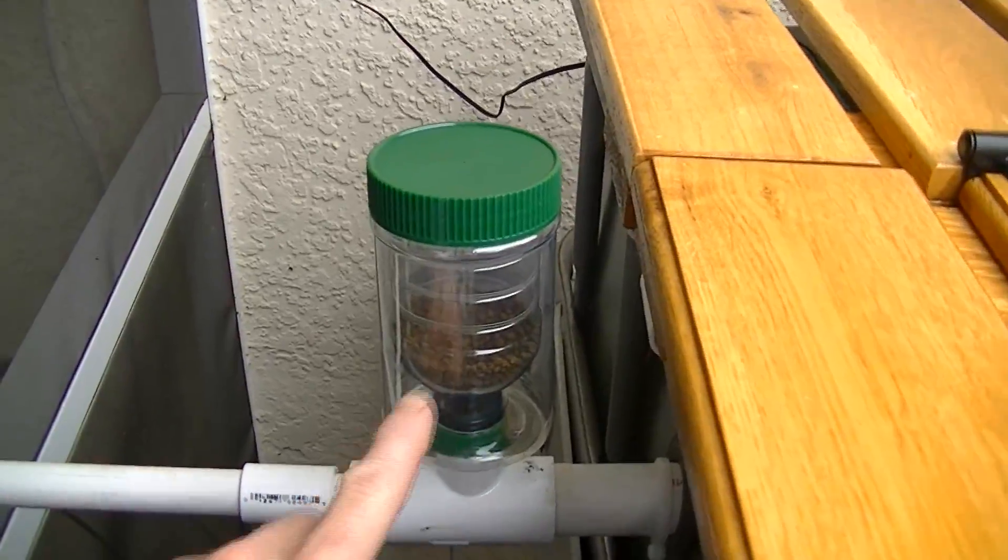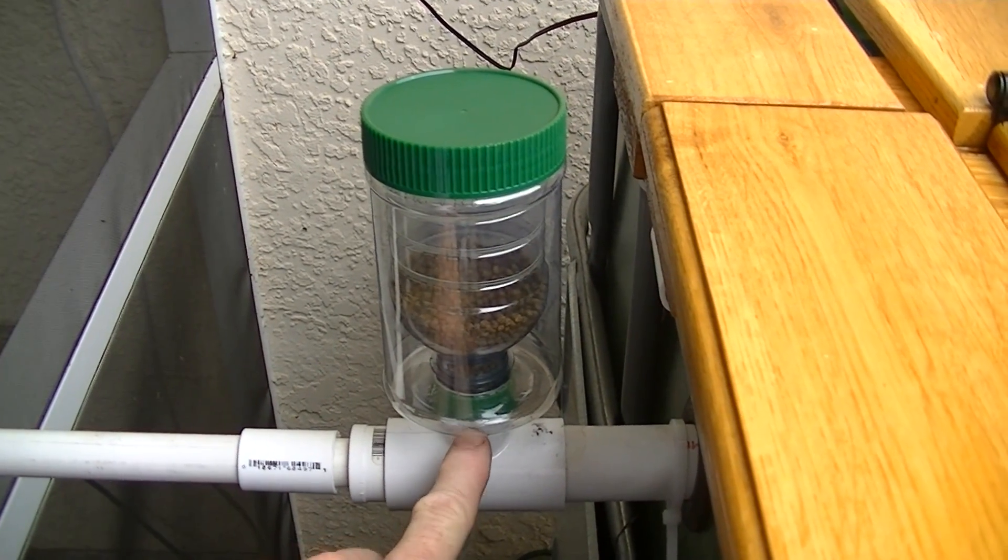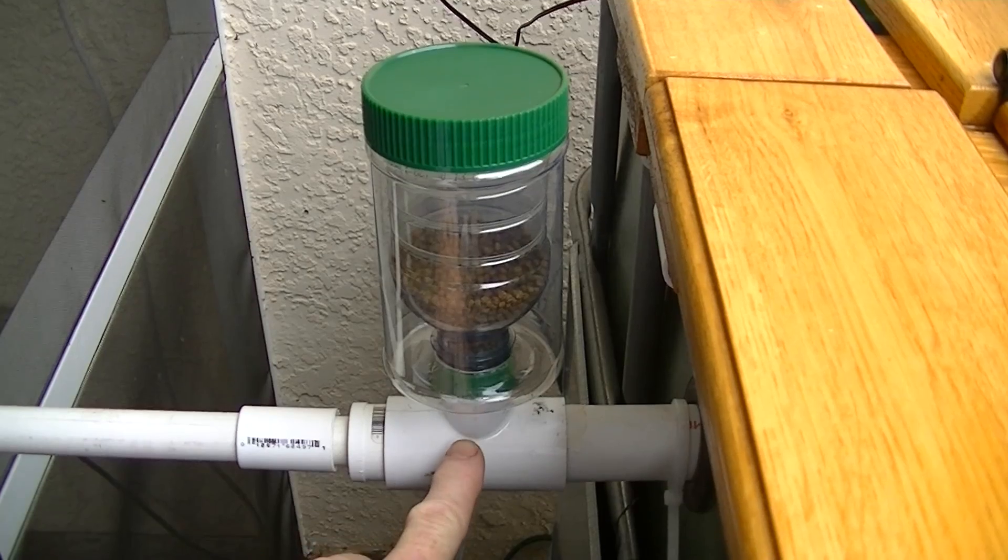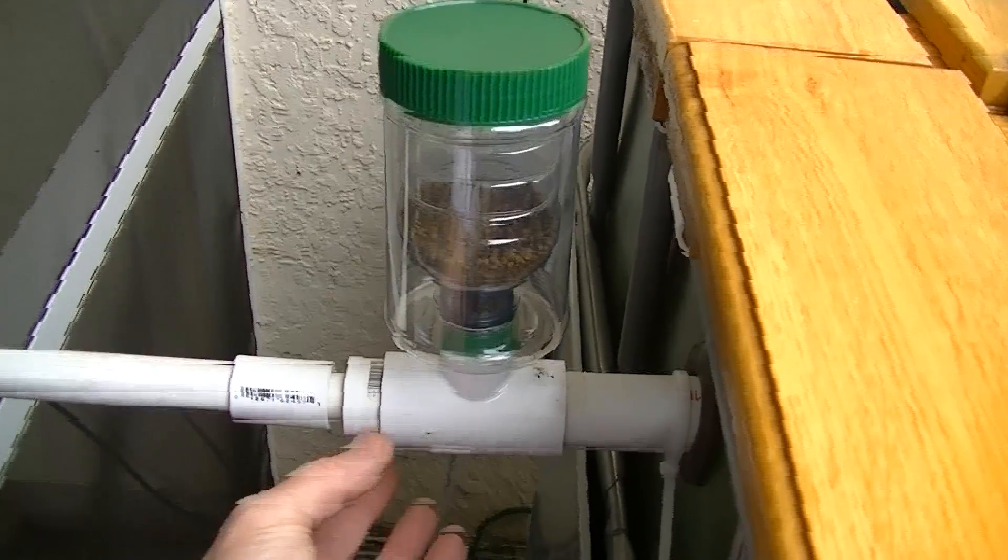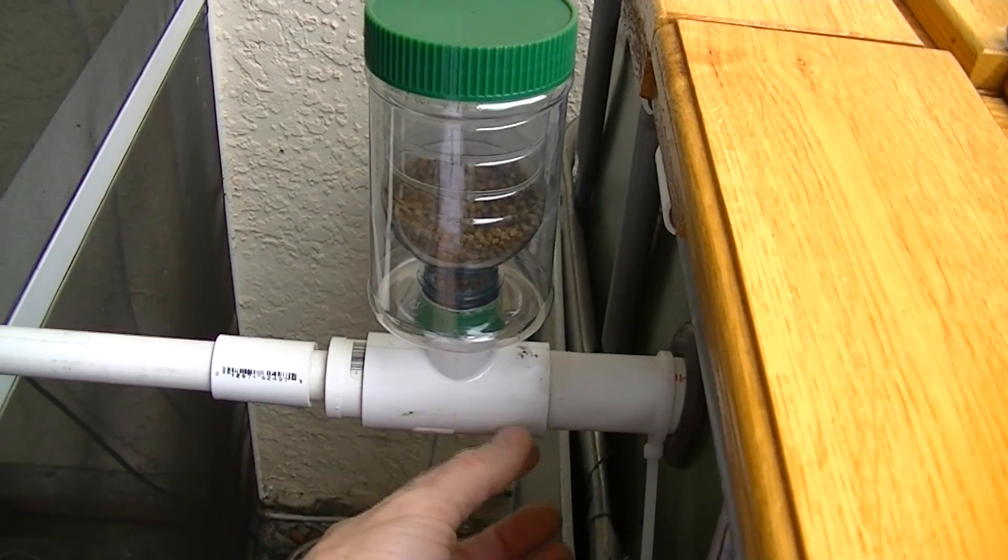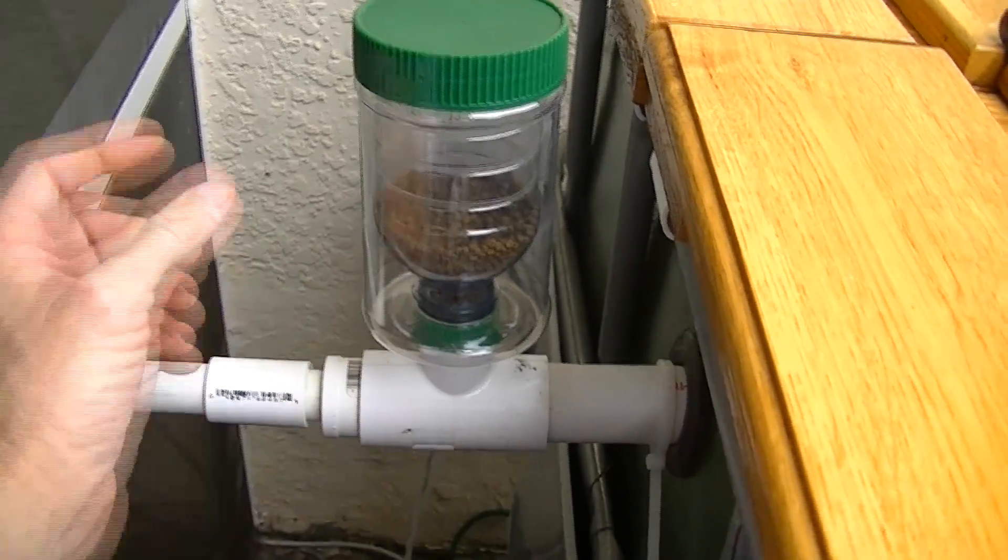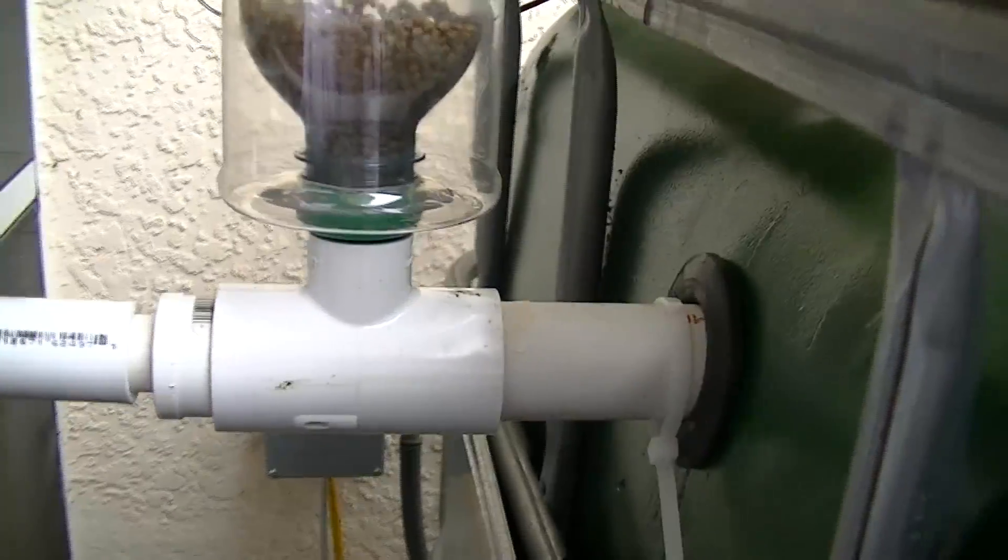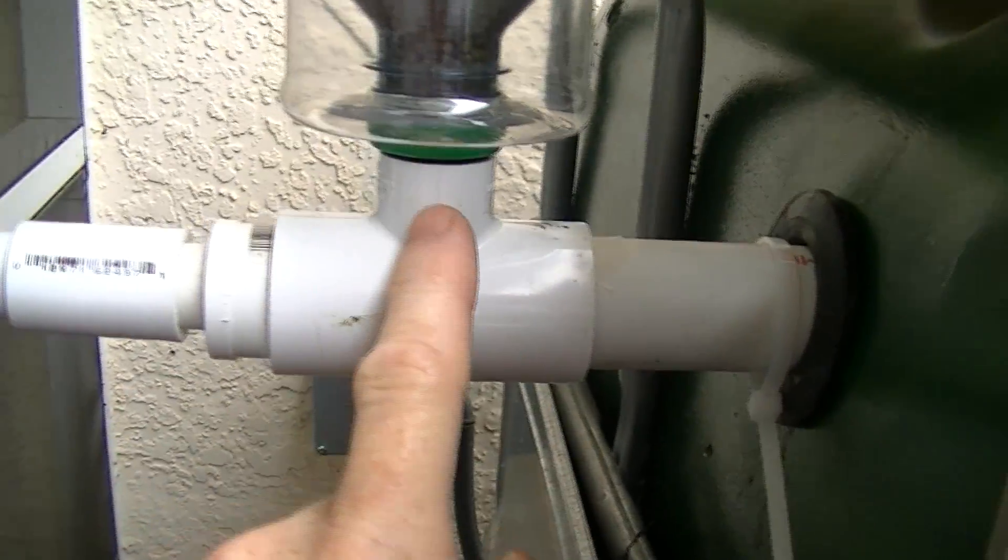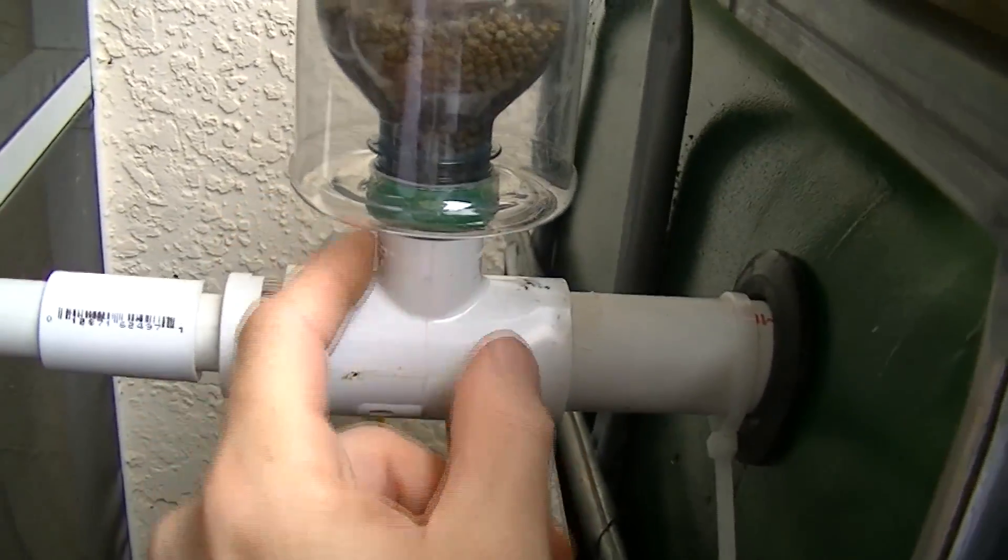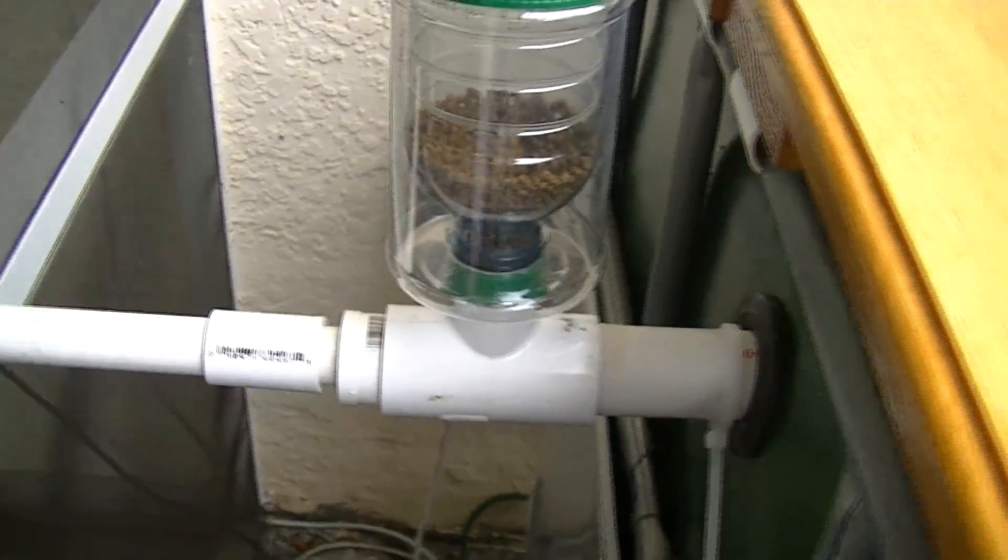I found that once I switched to the larger pellets, they started to clog. So that gave me the opportunity to switch out that piece I had before and put a T fitting in. It's a one inch to one inch to half inch. So now I'm using a half inch pipe under here. Half inch pipe so the pellets don't clog in the smaller fitting. It works a lot better and looks a little nicer.